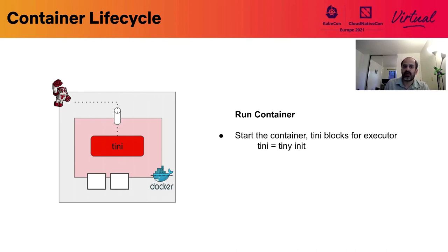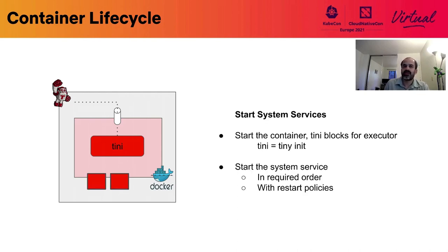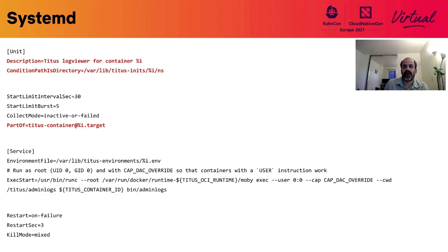Next, it runs the container with the entry point set to tini, which immediately blocks. This creates the namespaces and cgroups in which the system services will run. Tini is a tiny init for containers which is used by Docker, and we use our own fork. Now the executor can set system services running with the correct ordering and restart policies, and we do this using systemd. These services are actually parameterized units managed by the systemd running on the host.